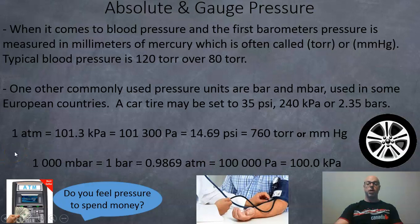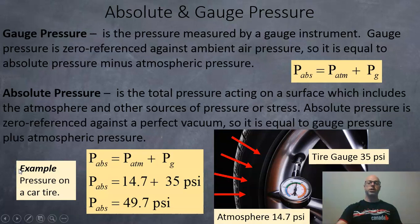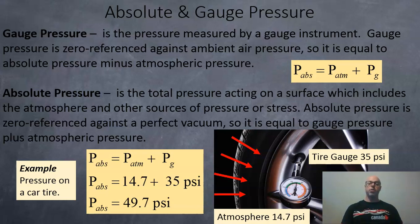An ATM is atmospheric pressure — not a banking machine. Gauge pressure is the pressure measured by a gauge instrument. Gauge pressure is zero-referenced against the ambient air pressure, so it equals the absolute pressure minus the atmospheric pressure. This means gauge pressure ignores the atmospheric pressure, because the atmospheric pressure is pressing on the gauge and on the object being measured equally — those two values cancel out, leaving you with just the gauge pressure.